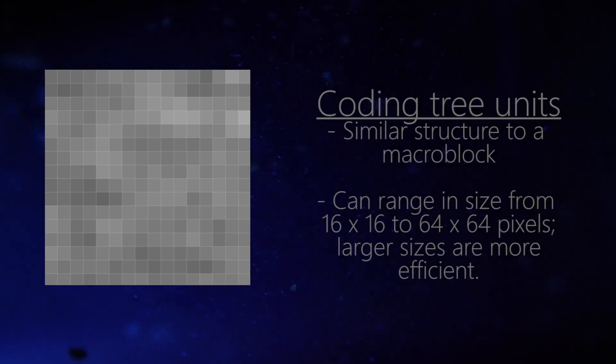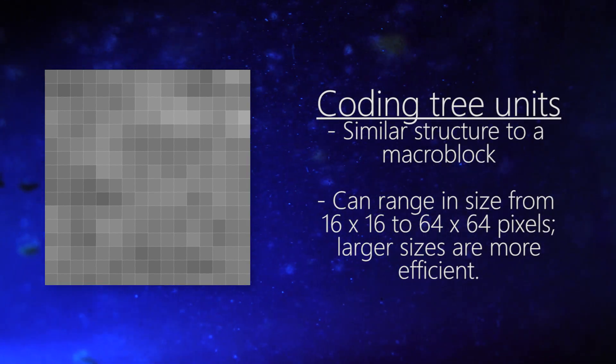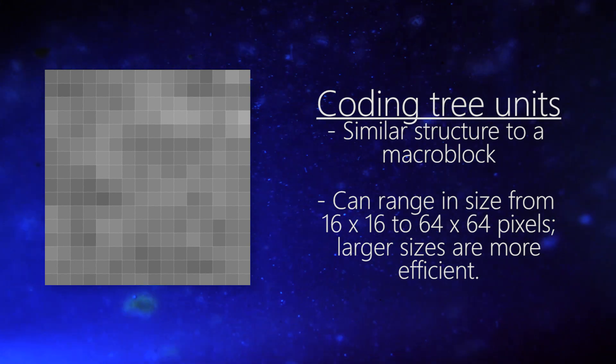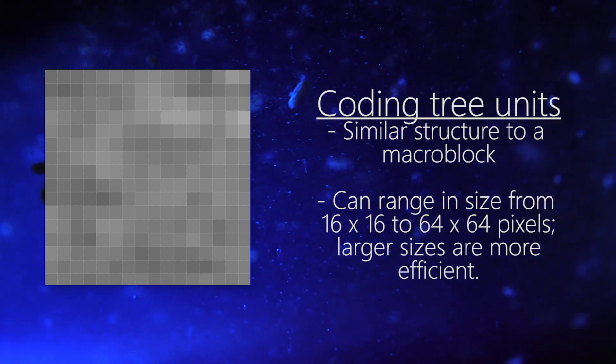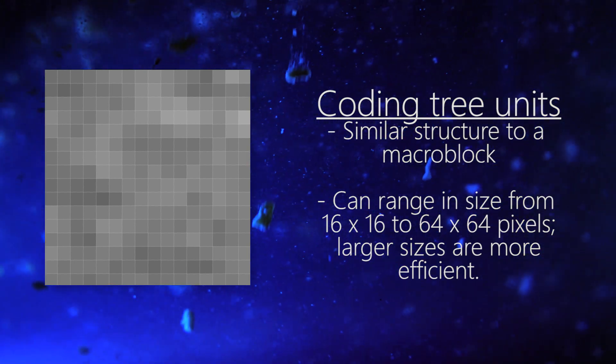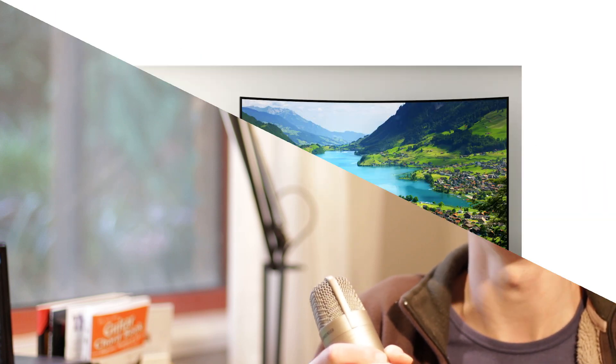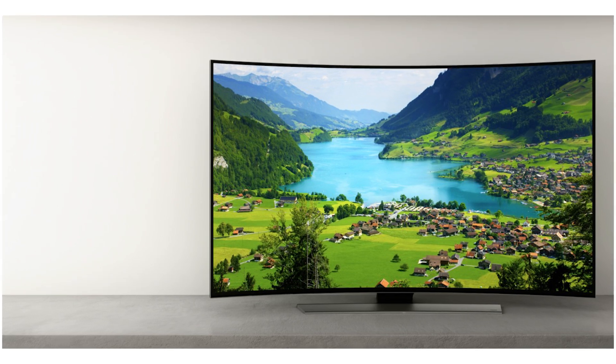Now, here is the H.265 difference. Macro blocks have now been renamed to Coding Tree Units, and they can range from the original 16x16 size all the way up to 64x64. Why is this such a big improvement? When H.264 was first standardised back in 2003, 1080p video was the height of technology. Now, of course, we've got 4K, and more efficient encoding is needed — and this is exactly what larger macro blocks give you.